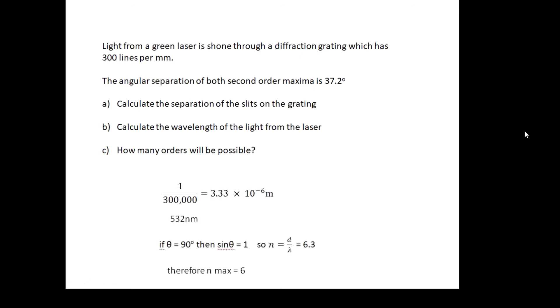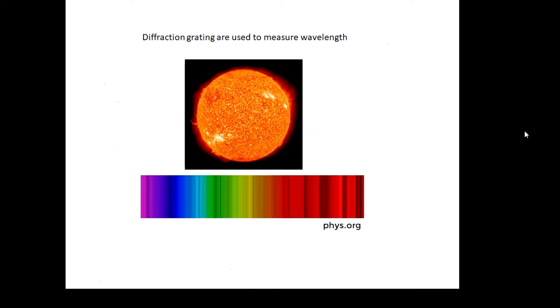I've also put this last bit: how many orders will be possible? This is a very common question. You basically find the value of n where sin θ = 1, because θ is 90°, and it's the integer below that. So if you get an answer of 6.3, then you get six orders. Diffraction gratings are used